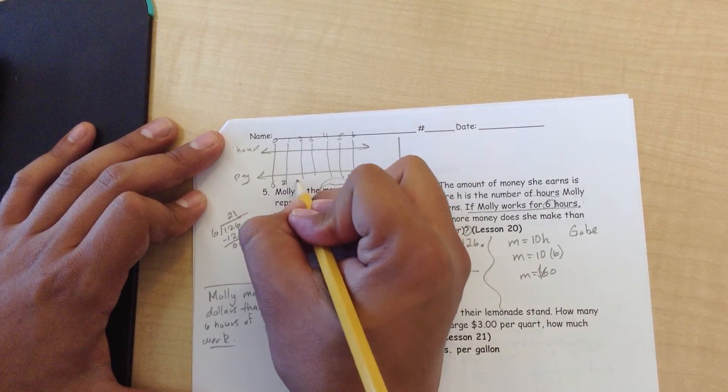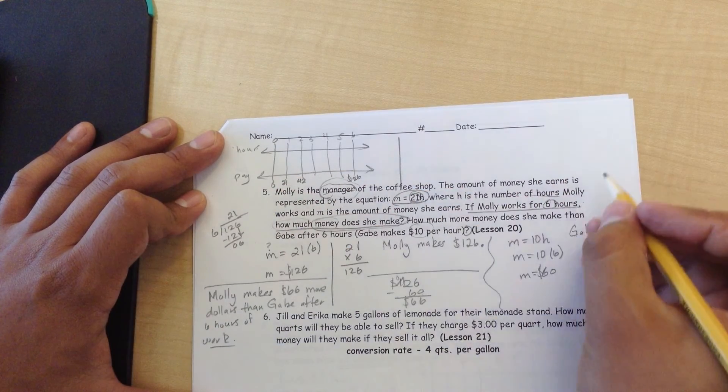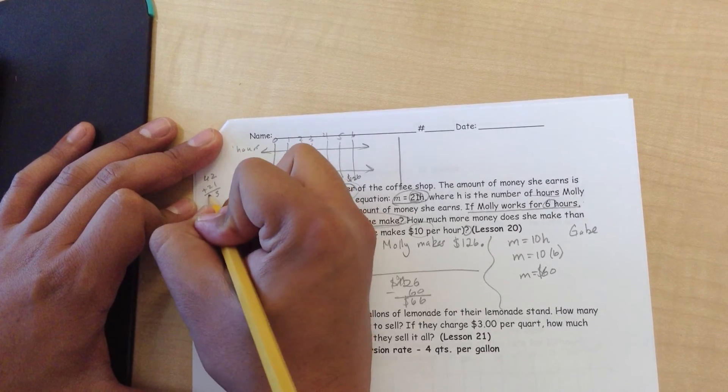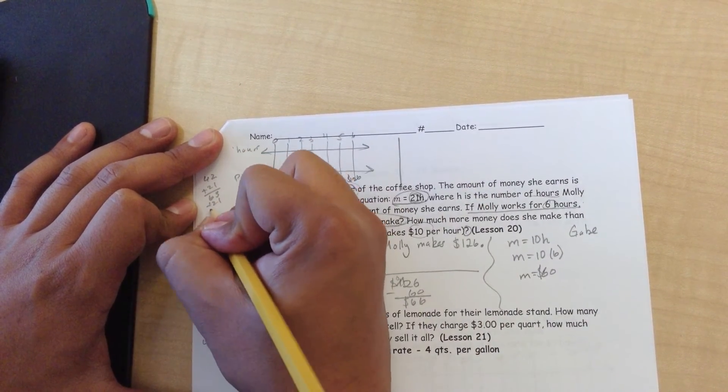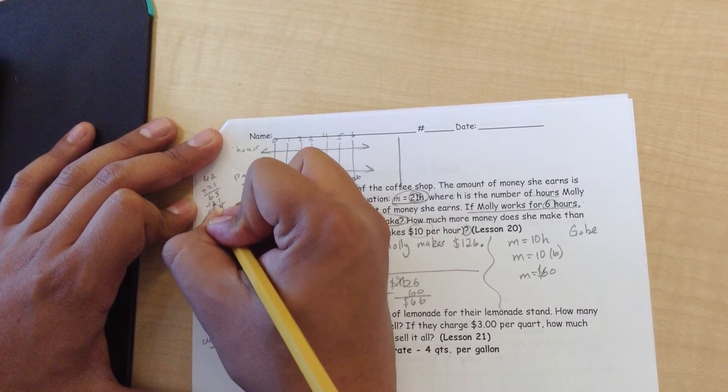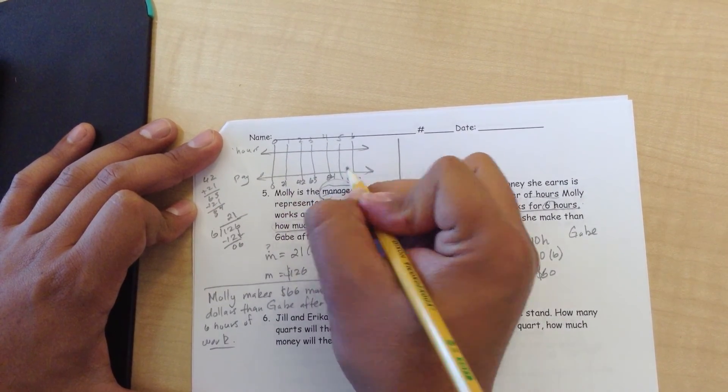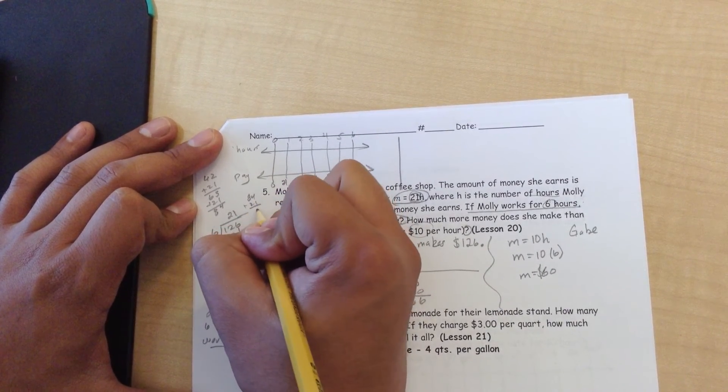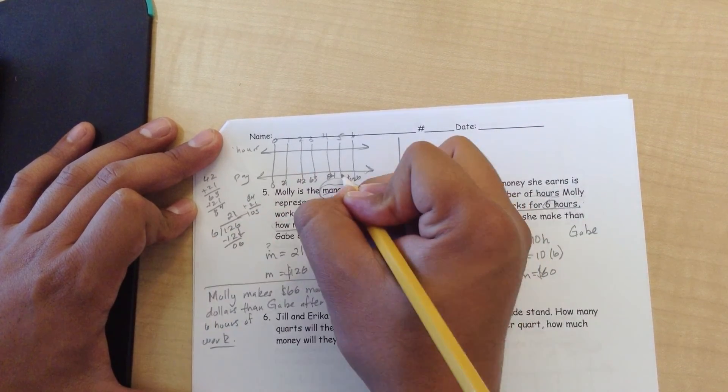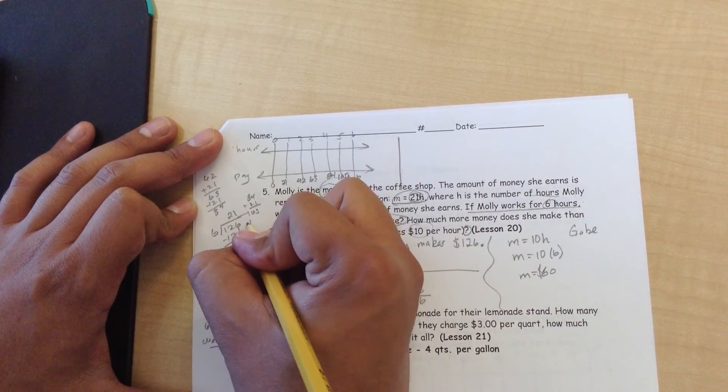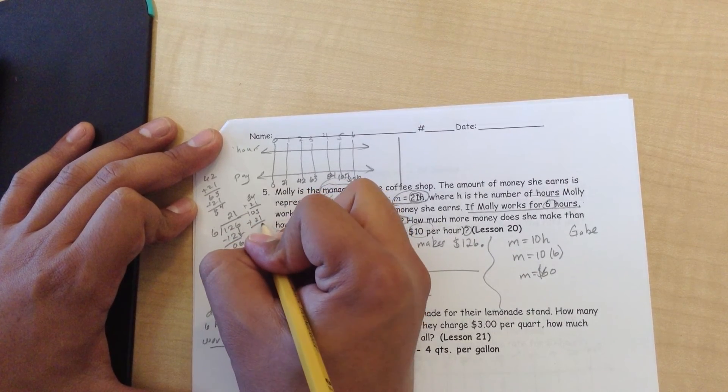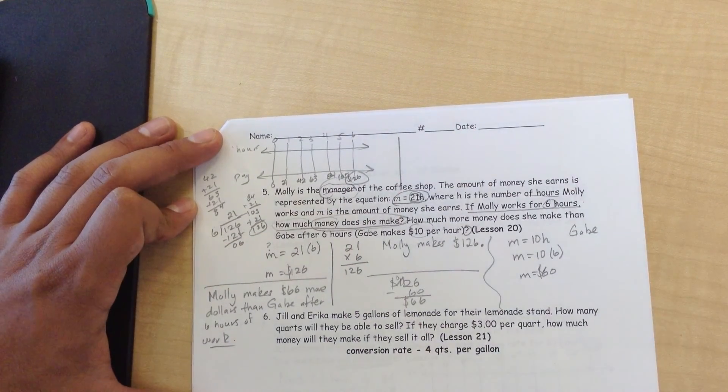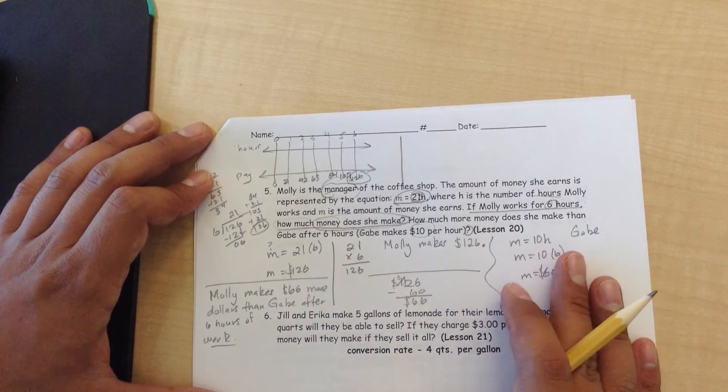So let's go ahead and add that. 21 plus 21 is 42. 42 plus 21, 2 plus 1 is 3, that's 63. 63 plus 21, 3 plus 1 is 4, 6 plus 2 is 8, that's 84. And 84 plus 21, 4 plus 1 is 5, 8 plus 2 is 10, so 105. Just to confirm, 126. 105 plus 21, 5 plus 1 is 6, 0 plus 2 is 2. 126.